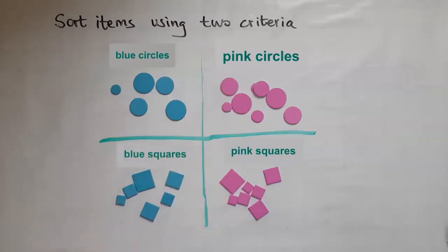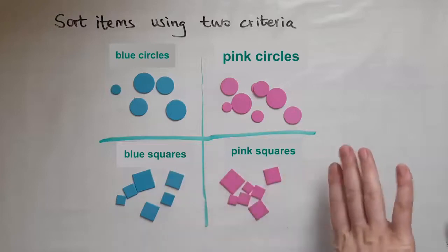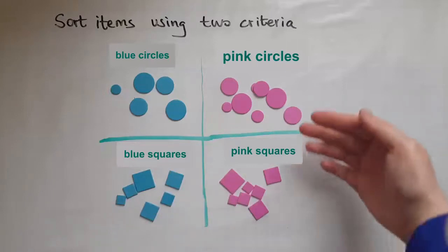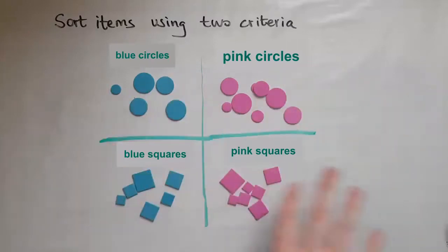So I've sorted these items using two criteria. One was the color, so I've split them into pink and blue. And the other one was the shape. So I've got circles at the top and I've got squares at the bottom.